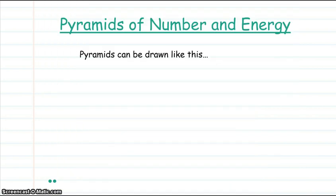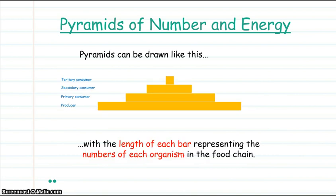Food chains can be represented with pyramids of number and energy. The pyramid of numbers can be drawn like this, with the length of each bar representing the numbers of each organism in the food chain.